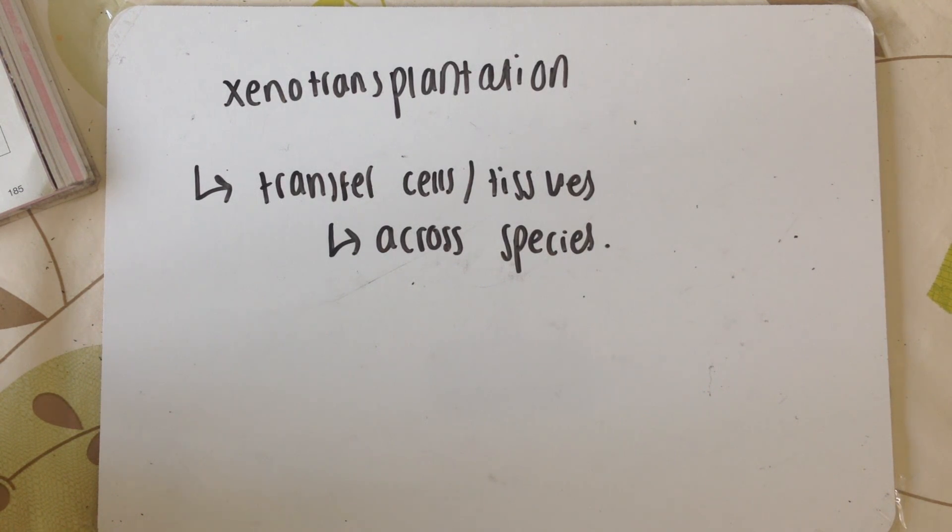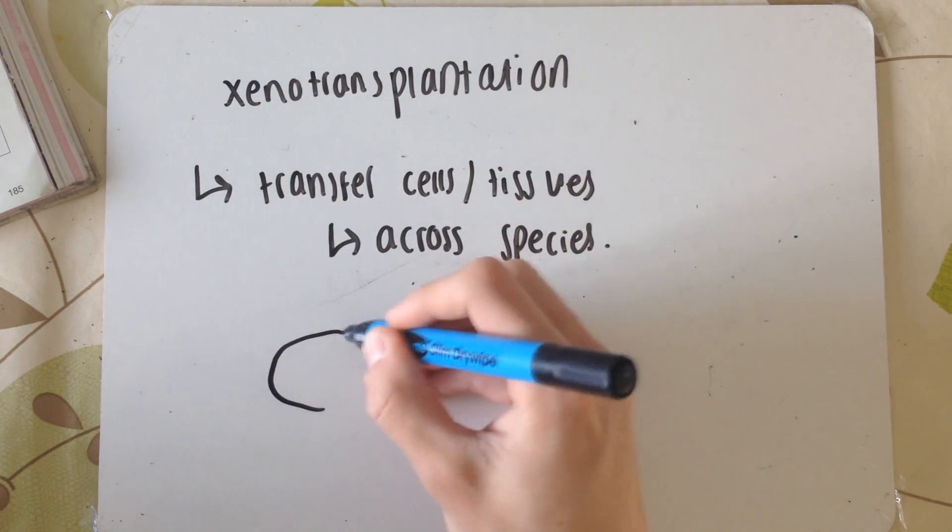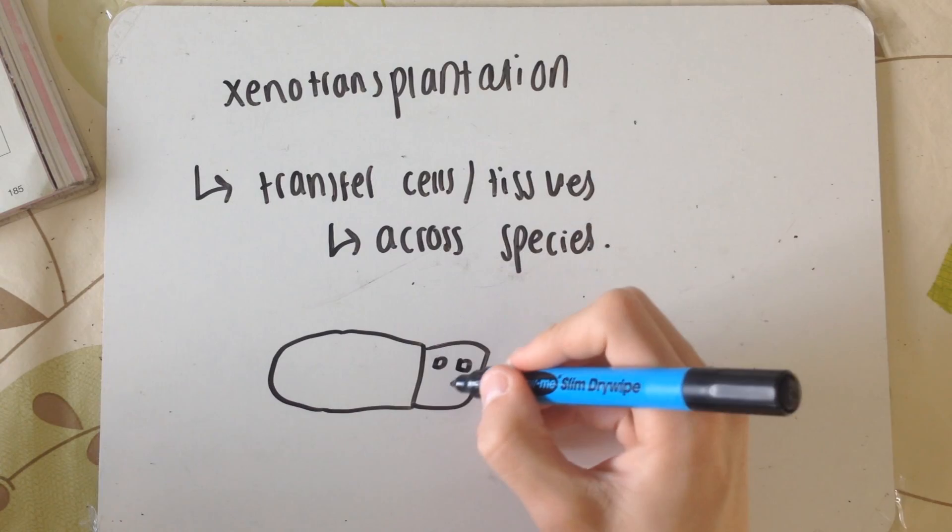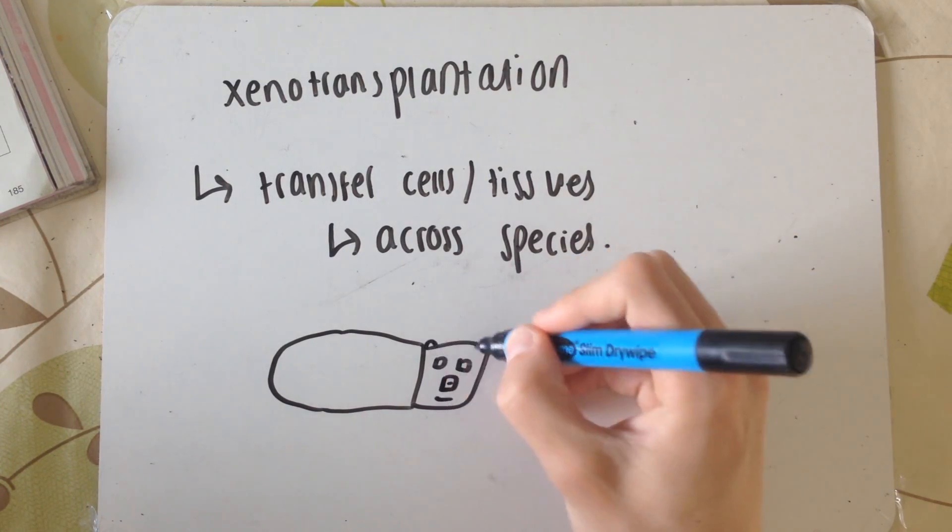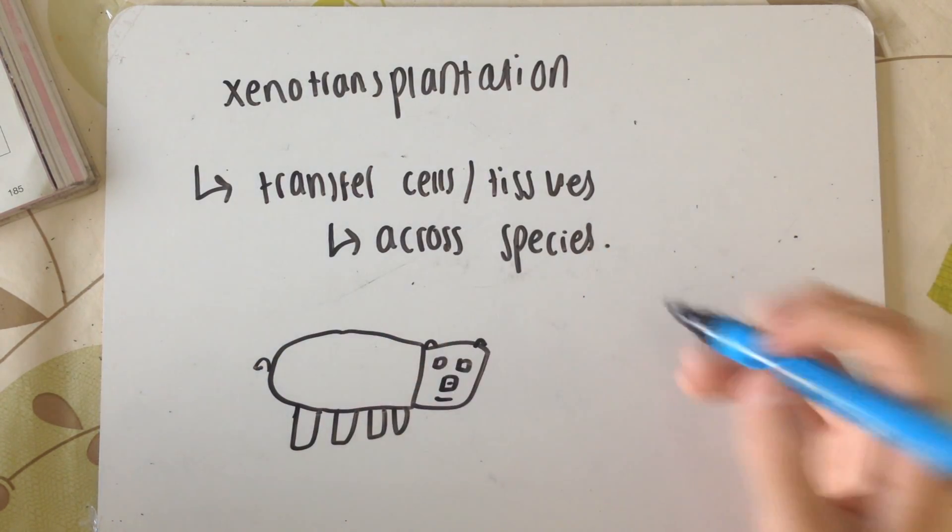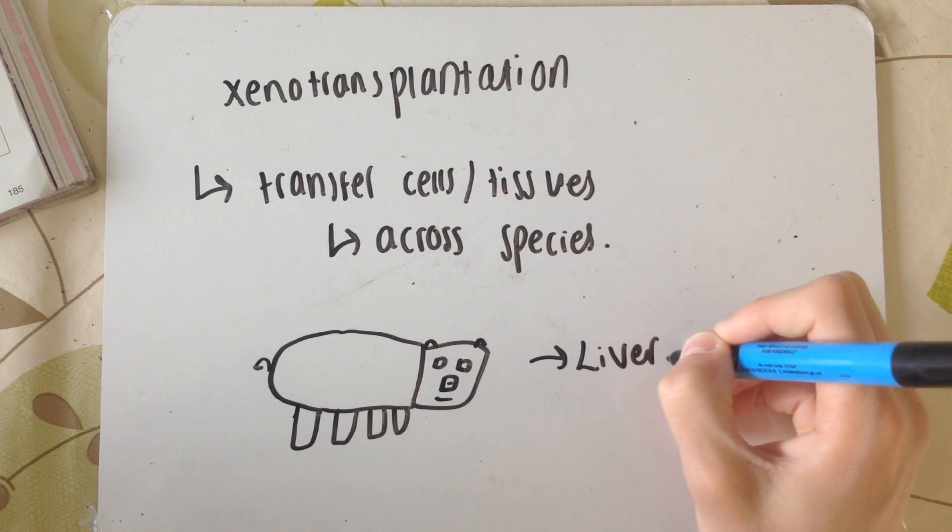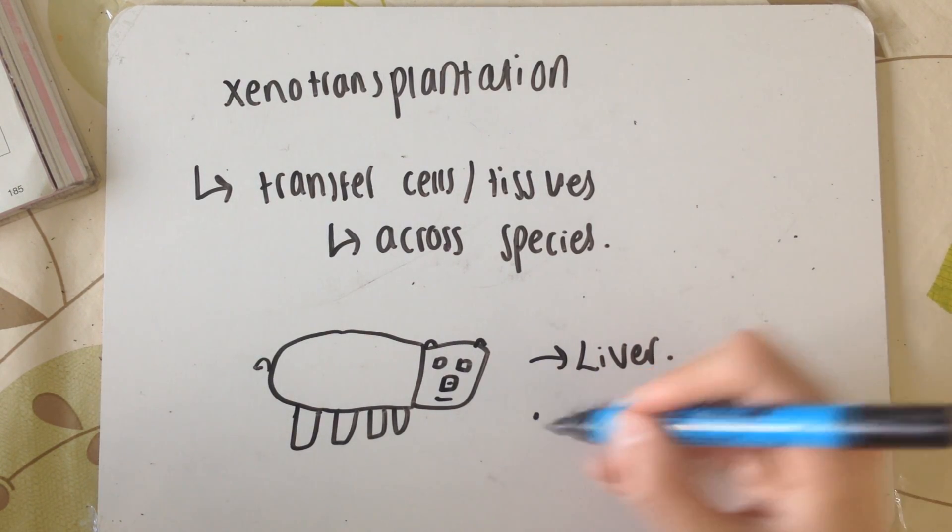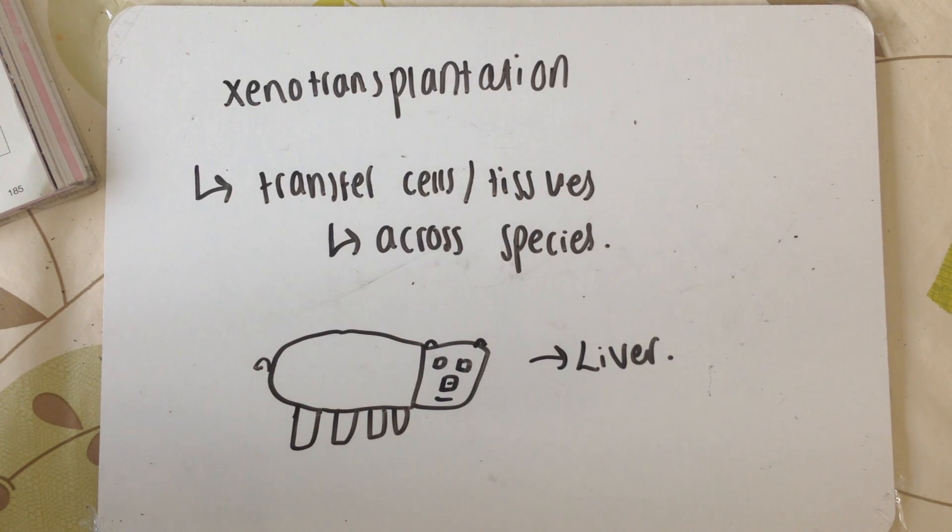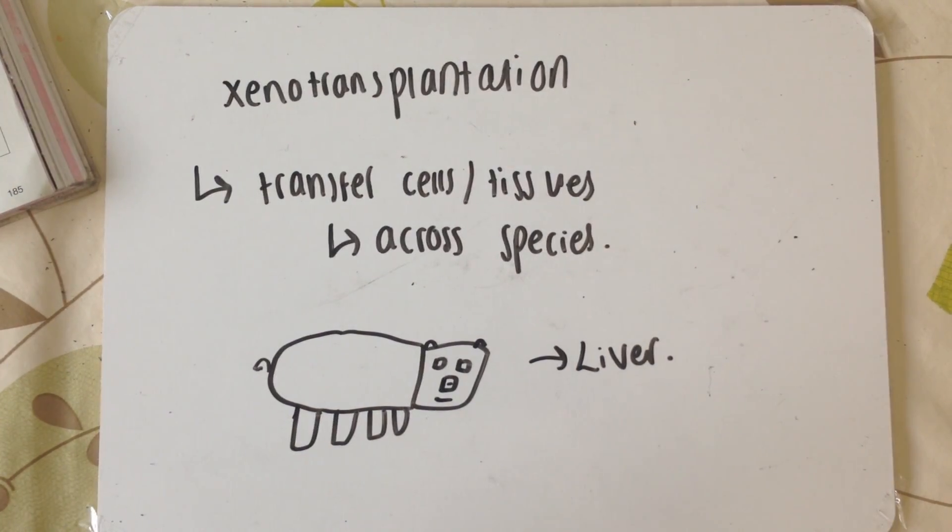This is good because things like a pig can grow a human liver potentially. But the current problems are differences in organ size. Pig livers are slightly different size to humans. Body temperature is 2 degrees higher than a human. That's why we need to grow human organs in other animals rather than just transfer the animal organs from other animals.